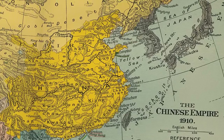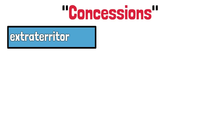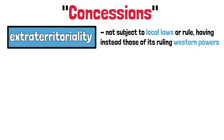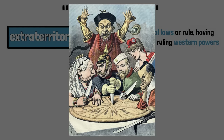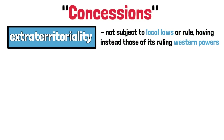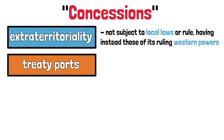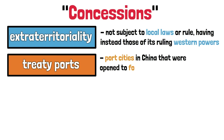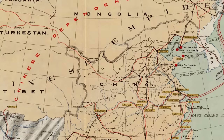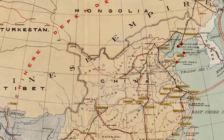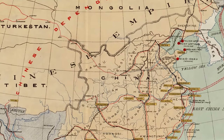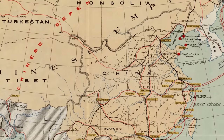The type of colonialism that China saw take place in its territory was called concessions. The concessions had extraterritoriality, meaning they were not subject to local laws or rule, having instead those of their ruling western powers, and were essentially exclaves inside key cities. In their majority, European colonies in China were effectively treaty ports. In this map, we can see them — they are the ones with the yellow boxes around the names.